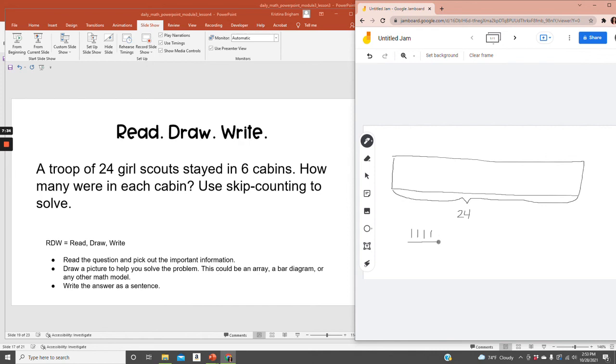There are four girls in each cabin. So we can say that there are six cabins with four Girl Scouts in each cabin.